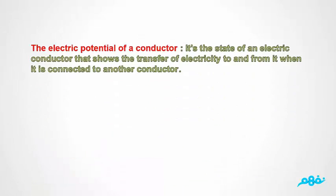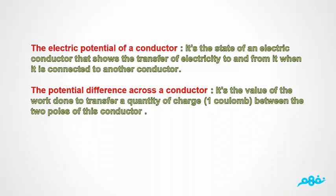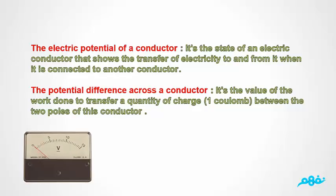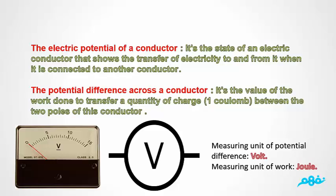The electric potential of a conductor is the condition of an electric conductor that shows the transfer of electricity to and from it when connected to another conductor. The electric potential difference of a conductor is the value of the work done to transfer a quantity of electric charge between the two ends of this conductor. The potential difference is measured using a voltmeter with symbol V, connected in parallel. The measuring unit of potential difference is volt; the measuring unit of work is joule.